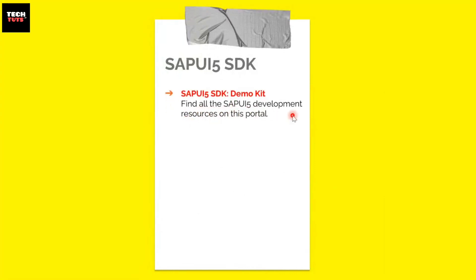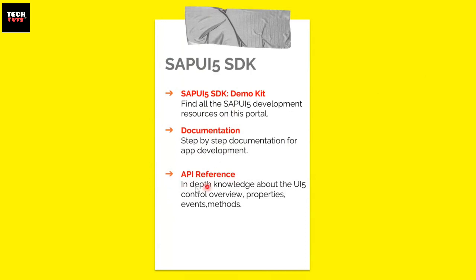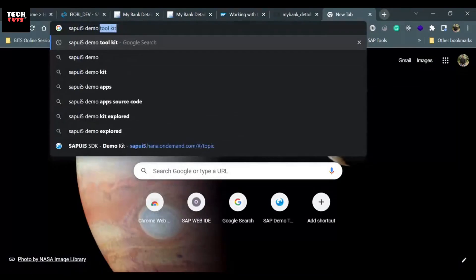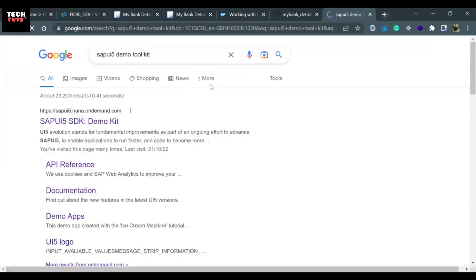SAP UI5 demo toolkit is a place where we can find all the SAP UI5 development-related resources. There is step-by-step documentation available for app development. Underneath the API reference section, we can find in-depth knowledge about SAP UI5 control overview, properties, events, and methods associated with each control. Underneath the demo app section, we can find design and coding guidelines.